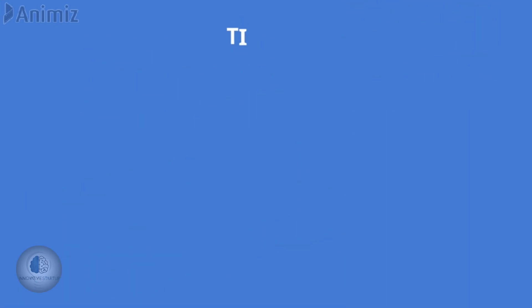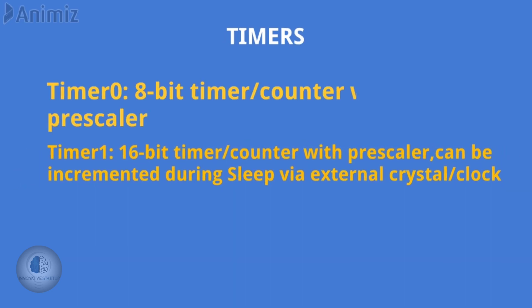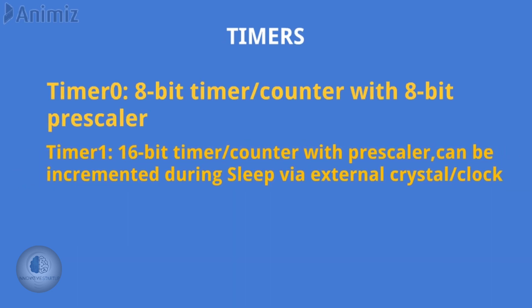There are 3 timers: Timer 0, Timer 1, and Timer 2. Timer 0 and Timer 1 are 8-bit timer counters. Timer 2 is a 16-bit timer.